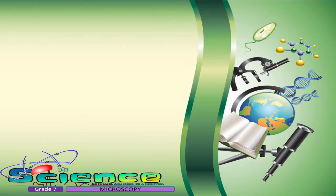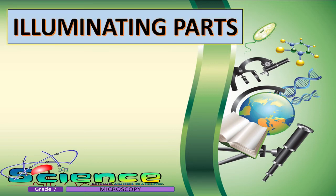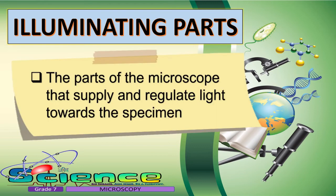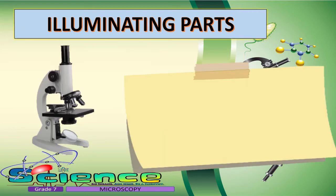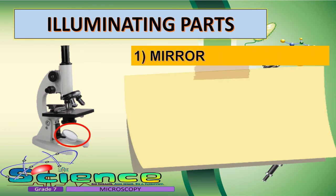Let us now proceed with the illuminating parts of the microscope. The word illuminate means to give light. Therefore, these are the parts of the microscope that supply and regulate the light towards the specimen. The first illuminating part is the mirror. The function of the mirror is to reflect light from an external light source up through the bottom of the stage, which illuminates the specimen.